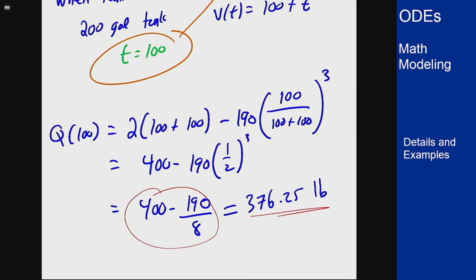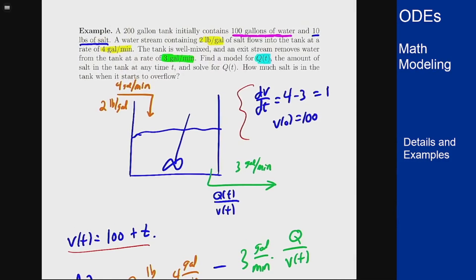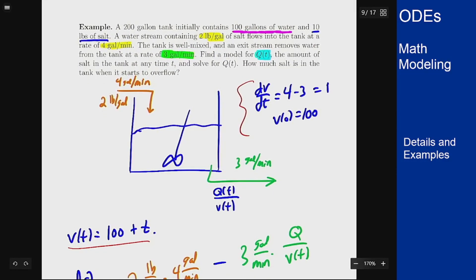In particular for this model, it makes sense that this should be less than 400. Why is that? Well 400, if we go back to the picture, would be the amount of salt in the tank if the tank was full at 200 gallons and it was entirely at concentration 2 pounds per gallon from the inflow stream.